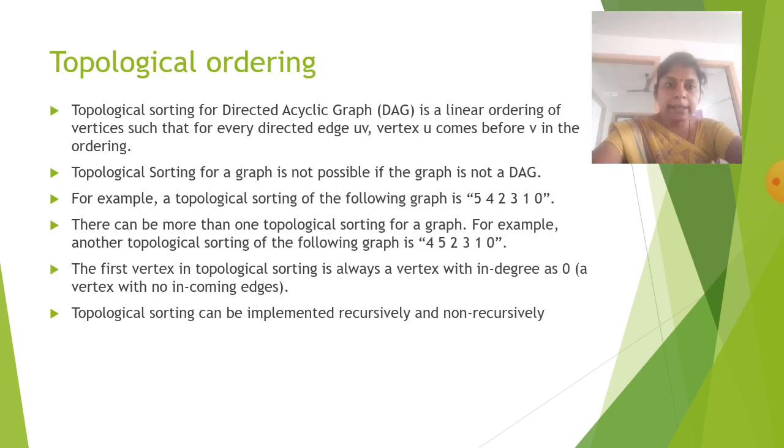Then topological ordering. Topological sorting for directed acyclic graph is a linear ordering of vertices such that for every directed edge uv, vertex u comes before v in the ordering. Topological sorting for a graph is not possible if the graph is not a DAG.